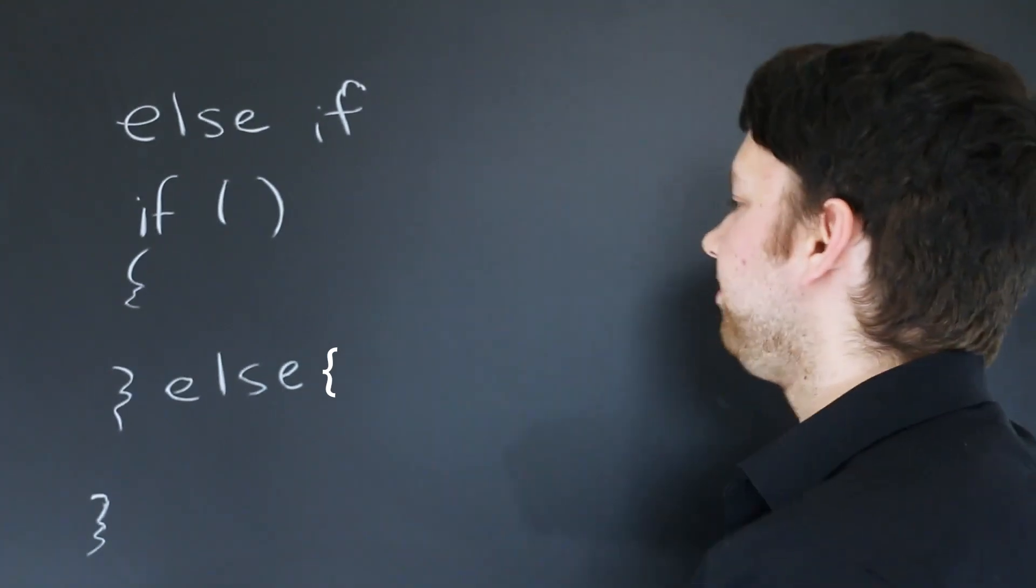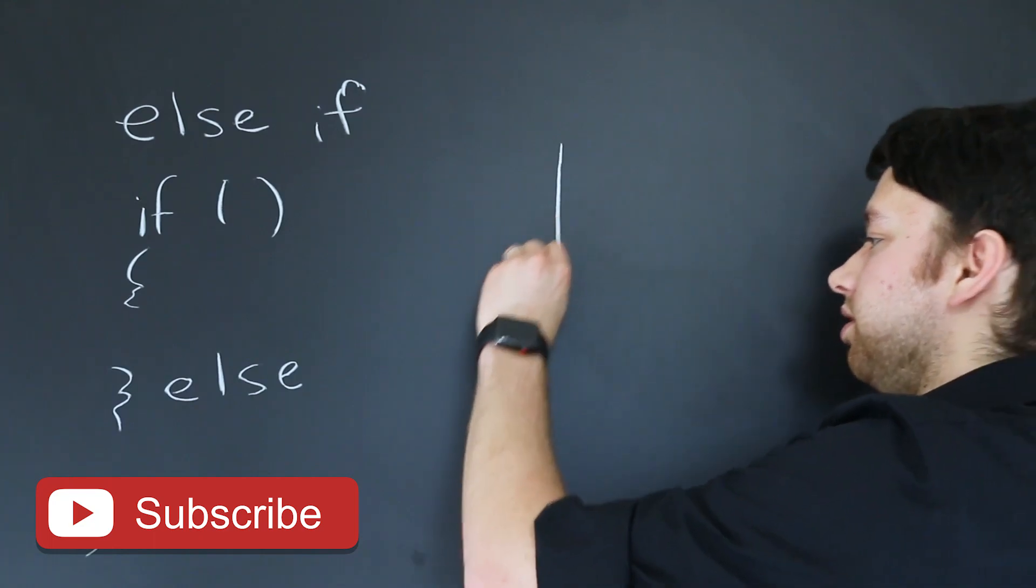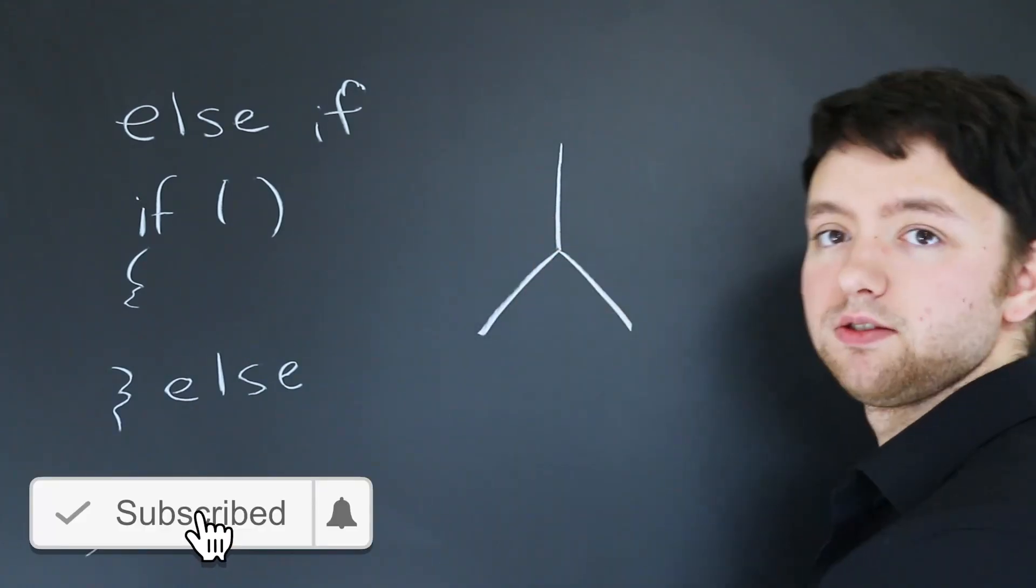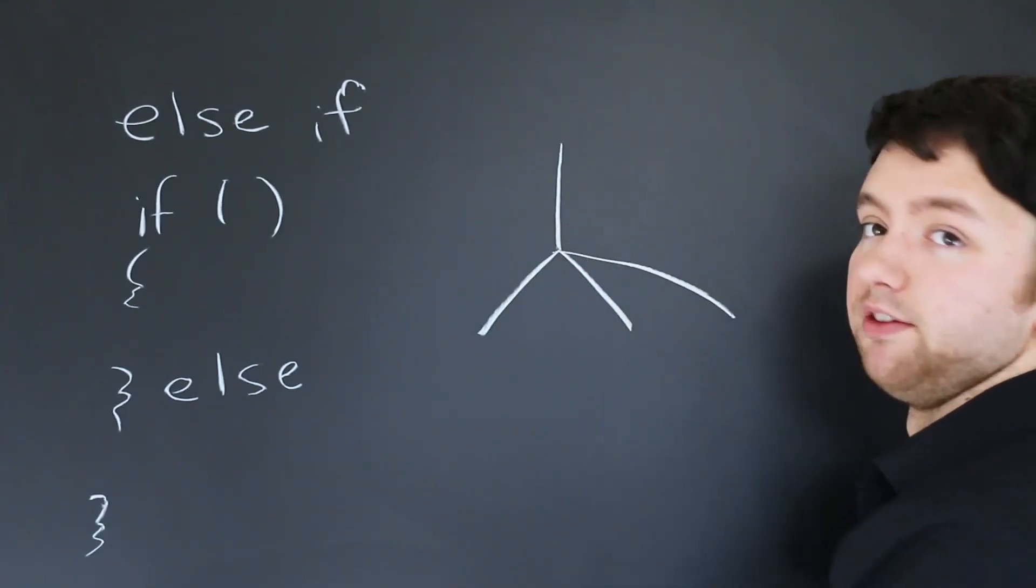So with an if else what you're doing is you're essentially taking your program and then what it's going to do is it's going to branch two different ways, right?